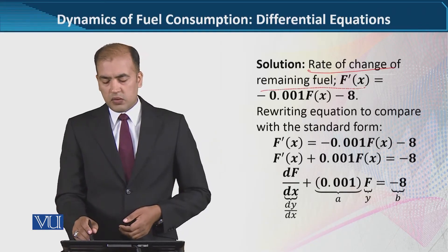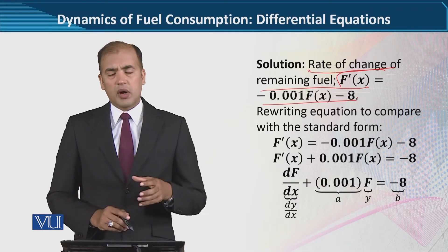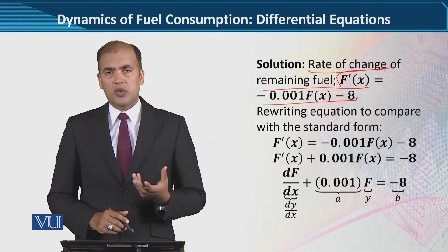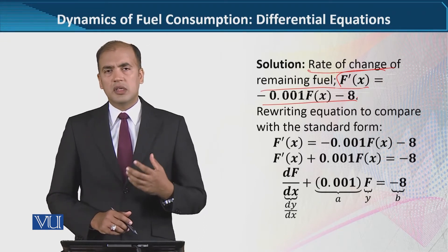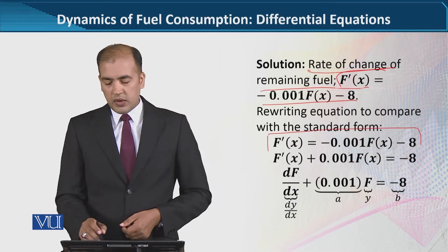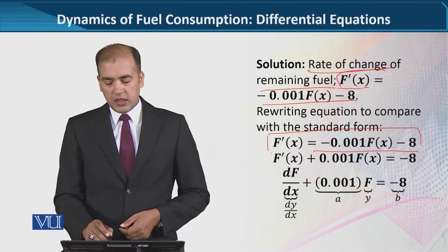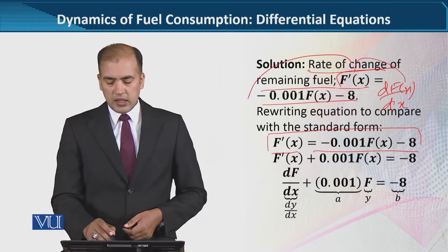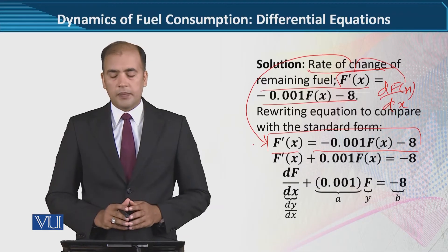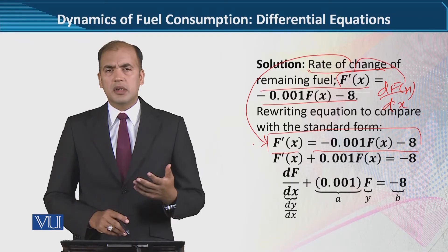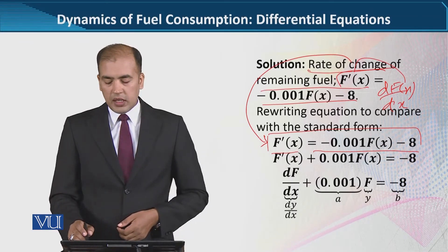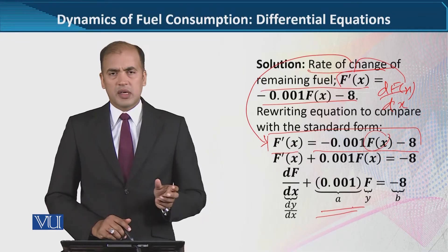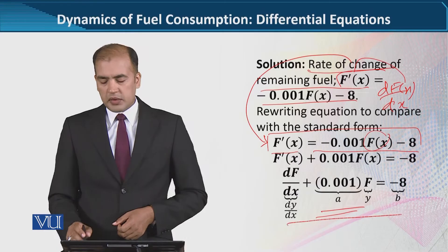This is the rate of change of remaining fuel, and this is the thing that we are assessing here — f-bar of x. In the next step, we have this formula written in standard form. Here we have arranged the f(x) term on the left-hand side, brought over from the right-hand side, so its sign changes. Now this is comparable to the standard form.